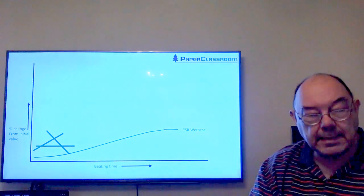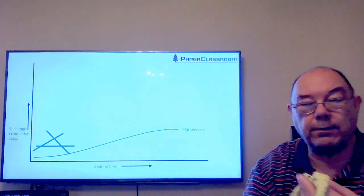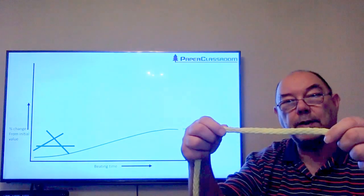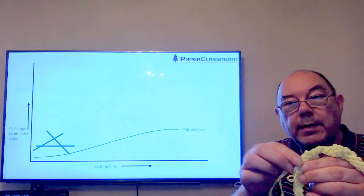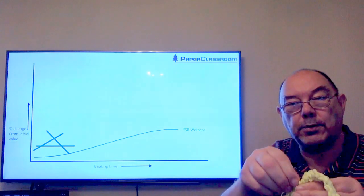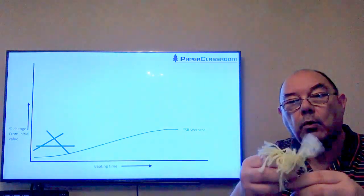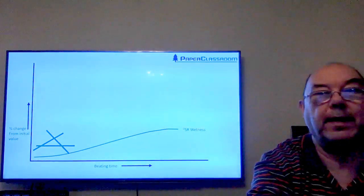External fibrillation means teasing out fibrils from the surface of the fiber. There's an unmodified fiber, and as we continue beating, we tease out all these fibrils from the surface, and thus we increase the surface area of those fibers.